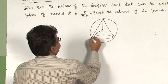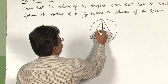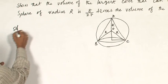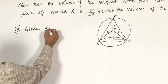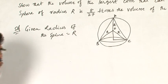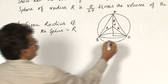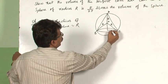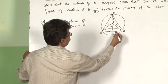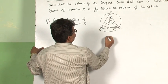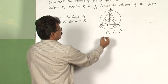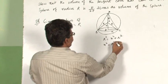Assume that O is the center of the sphere. Let the points be A, B, C. Given: radius of the sphere is capital R. Let small r be the radius of the cone, and let the point D be such that OD is equal to x. From this right triangle, capital R squared is equal to x squared plus small r squared, so small r squared is equal to capital R squared minus x squared.